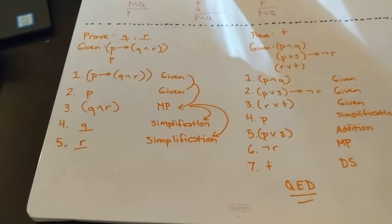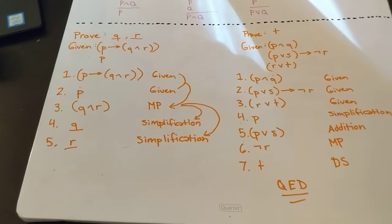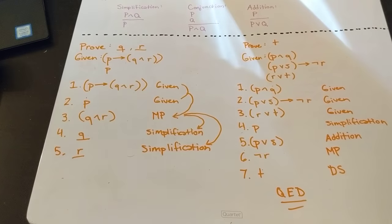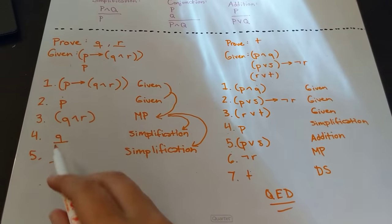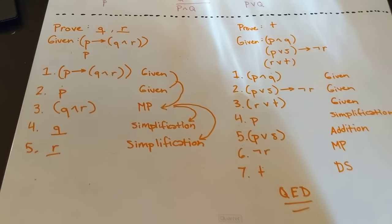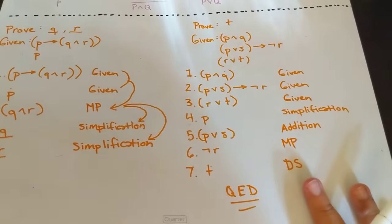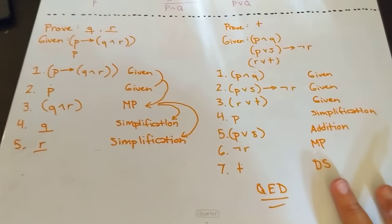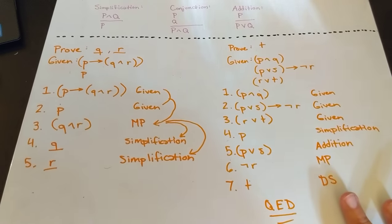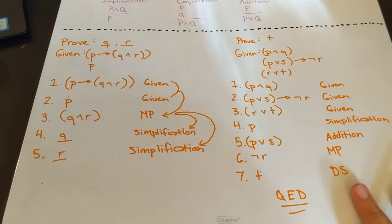All right. So these were two sets of proofs that basically only used our rules of inference, although this technically required a little bit of commutative property that I glossed over. But this is how you do a proof just with rules of inference, not bringing in our logic laws either. In the next video, we'll show some mixing of rules of inference with logic rules.